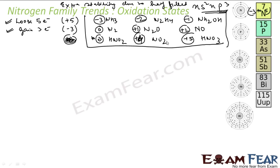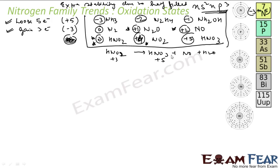The intermediate oxidation states +1 to +4 are not very stable. They tend to disproportionate in acid solution. For example, HNO₂ (which has oxidation state +3) will try to become HNO₃ (oxidation state +5) and NO (oxidation state +2). So +1 and +2 are not stable and tend to disproportionate.